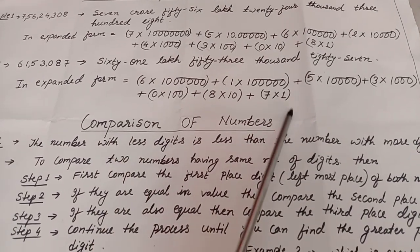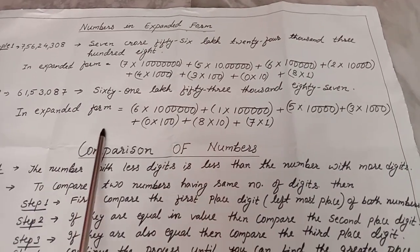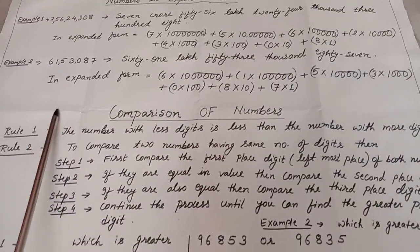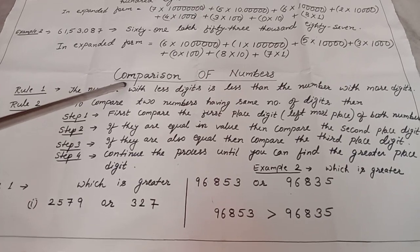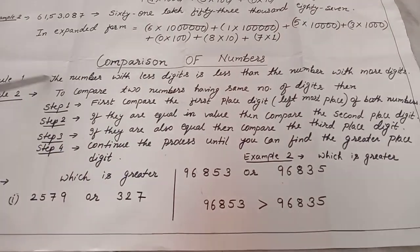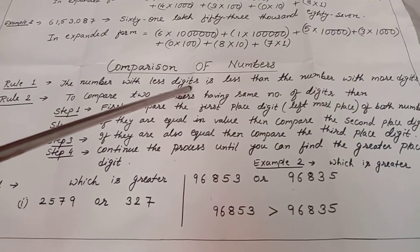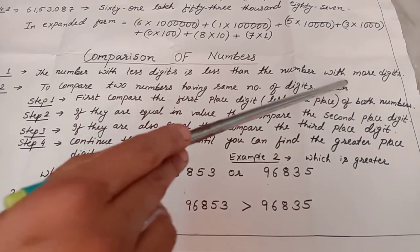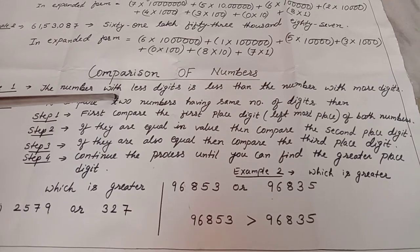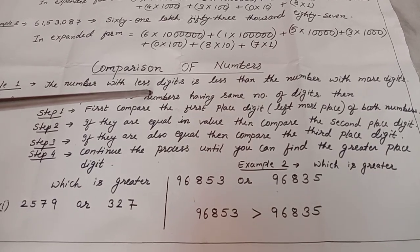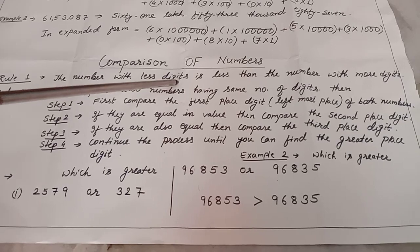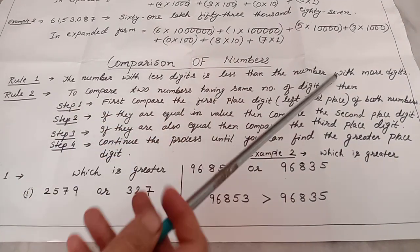Now you should be able to compare large numbers. Here are the rules for comparison of numbers. Rule 1: the number with fewer digits is less than the number with more digits. That means if two numbers are given and one has more digits and one has fewer, the number with more digits is always greater.